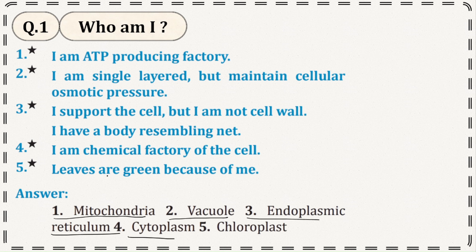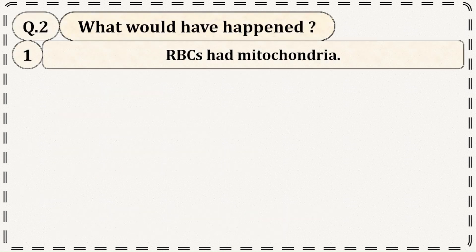I am a chemical factory of the cell. Leaves are green because of me — the answer is chloroplast. Let us discuss question number 2: What would have happened?